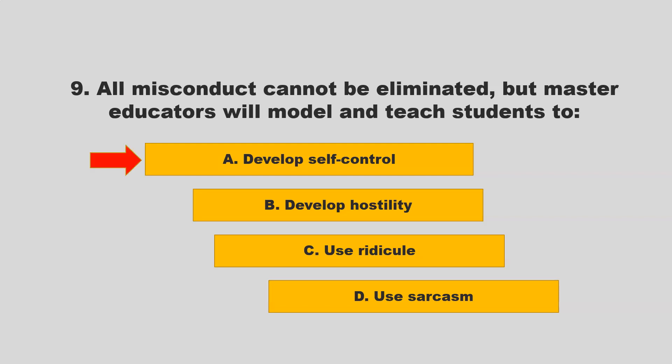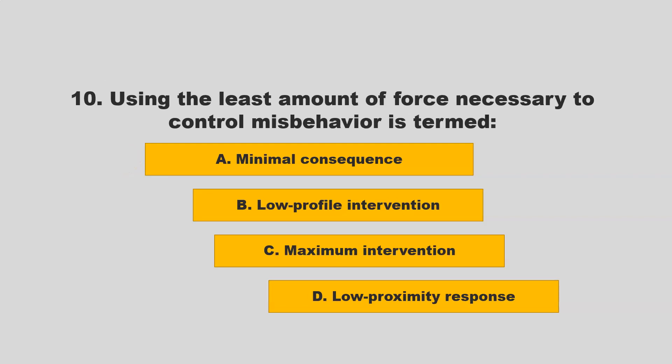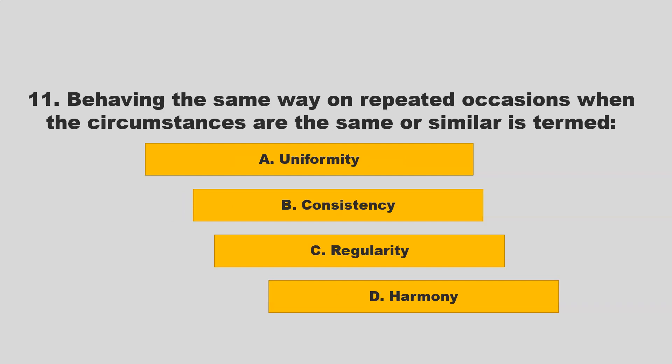If you chose A, develop self-control, you are correct. Using the least amount of force necessary to control misbehavior is termed low profile intervention. Other options included minimal consequence, maximum intervention, and low proximity. If you chose B, low profile intervention, you are correct.